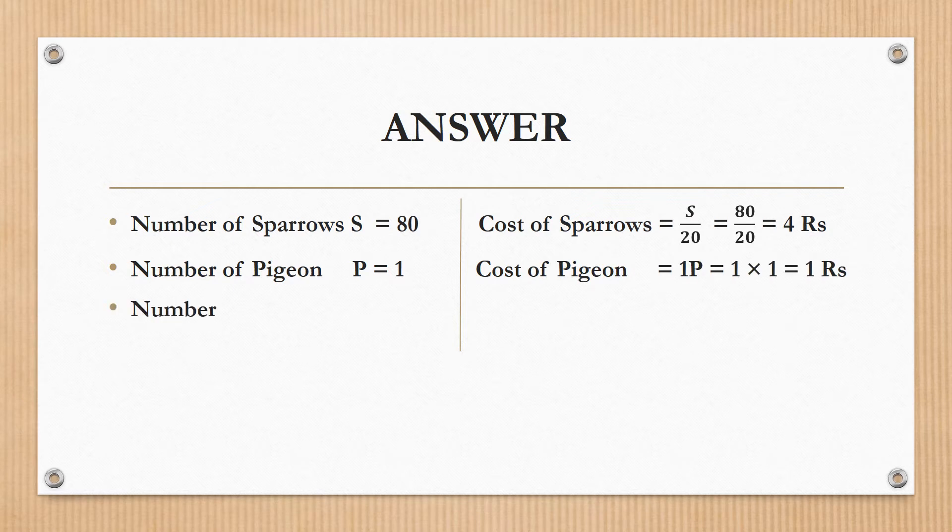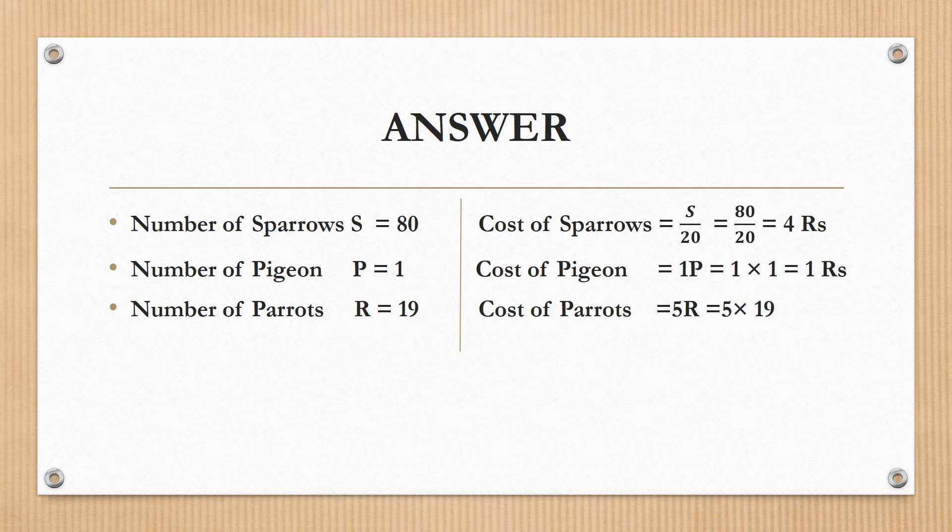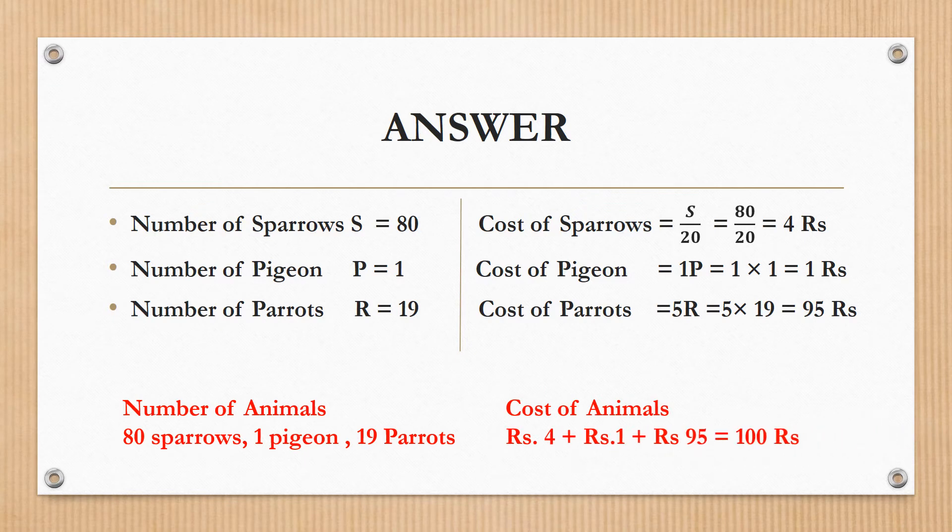Number of animals and cost of animals: 80 sparrows at 4 rupees, 1 pigeon at 1 rupee, 19 parrots at 95 rupees. So the number of animals and the cost of animals both equal 100.